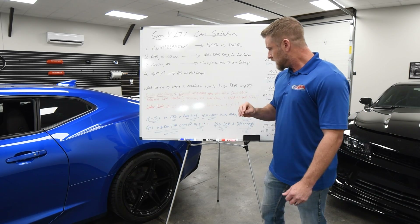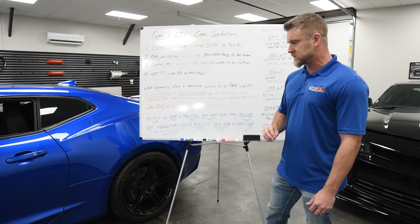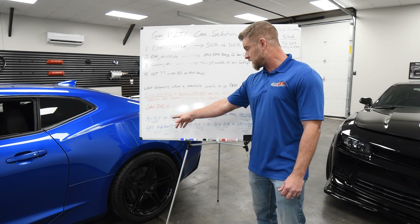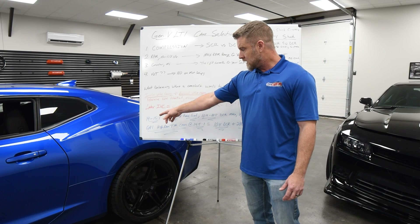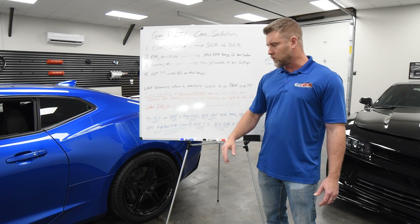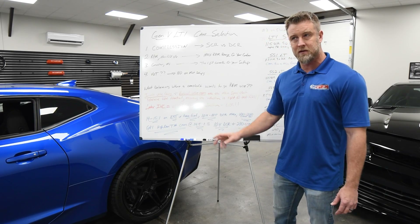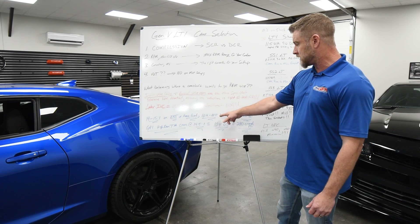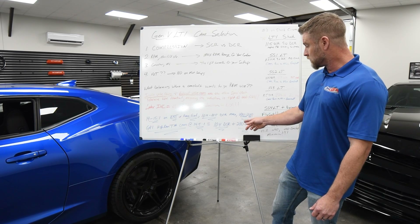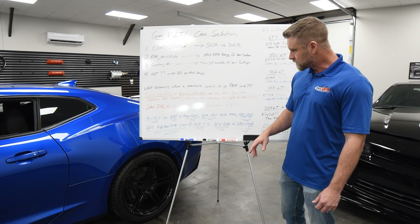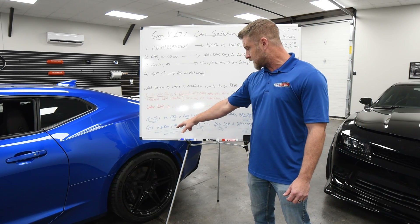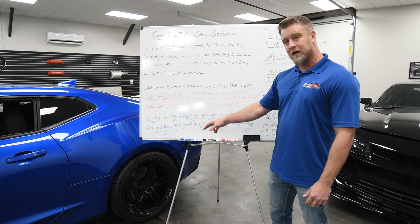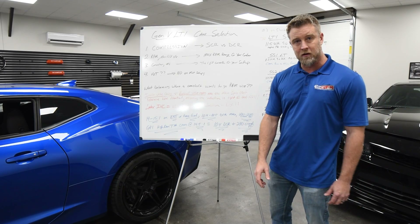For our Track Attack and high-RPM camshaft applications, even on stock bottom-end stuff, we're running between 14:1 and 15:1 static compression on E85 mostly — we've tried Q16 and some race fuels, but E85 seems to be a bit better on the DI engine. This usually equates to about 10.4 to 10.5 dynamic compression, and these engines pump anywhere between 220 and 240 PSI cranking compression. The high-RPM Track Attack cam — like in Brandon Hill and Cory West's blue car — is in the 14.5:1 range, 10.4 dynamic, pumping about 230 PSI.